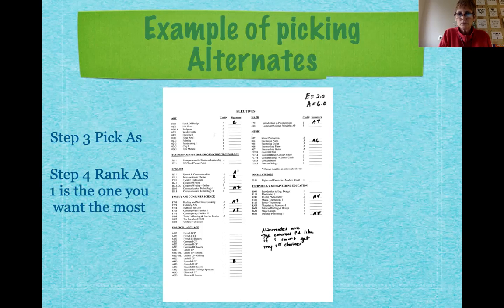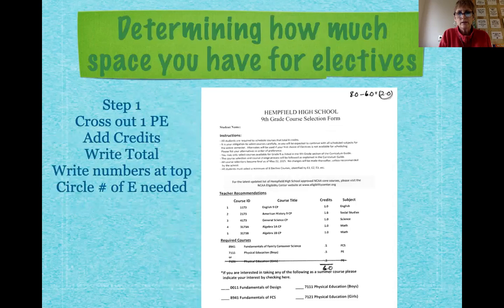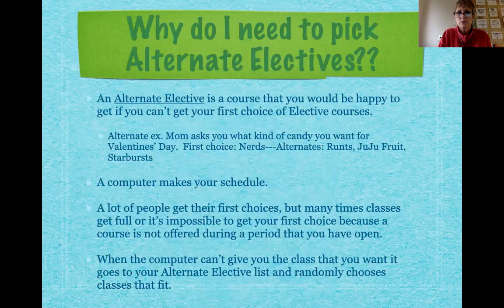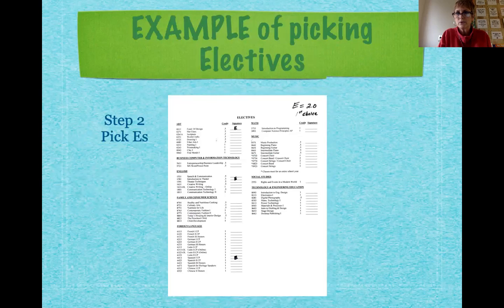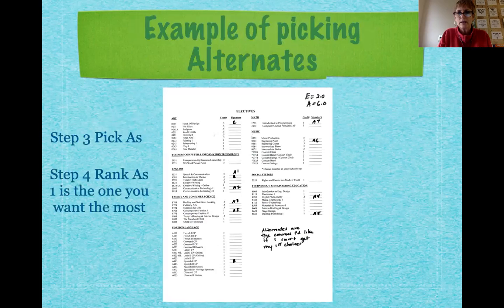So just to review quickly: add up the number of courses you're required to take and subtract it from eight, and show that math in the upper left hand corner. Circle the number of electives you're going shopping for. Go to the other side, go shopping for electives, and put an E beside the number of credits you're allowed, to add up to eight. Then go back and pick six credits worth of alternate electives, and rank them.